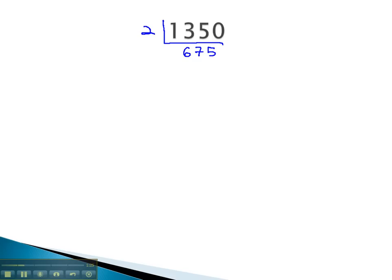You might notice that this number ends in a 5. That would suggest we can divide 675 by 5. When we do, we get 135.